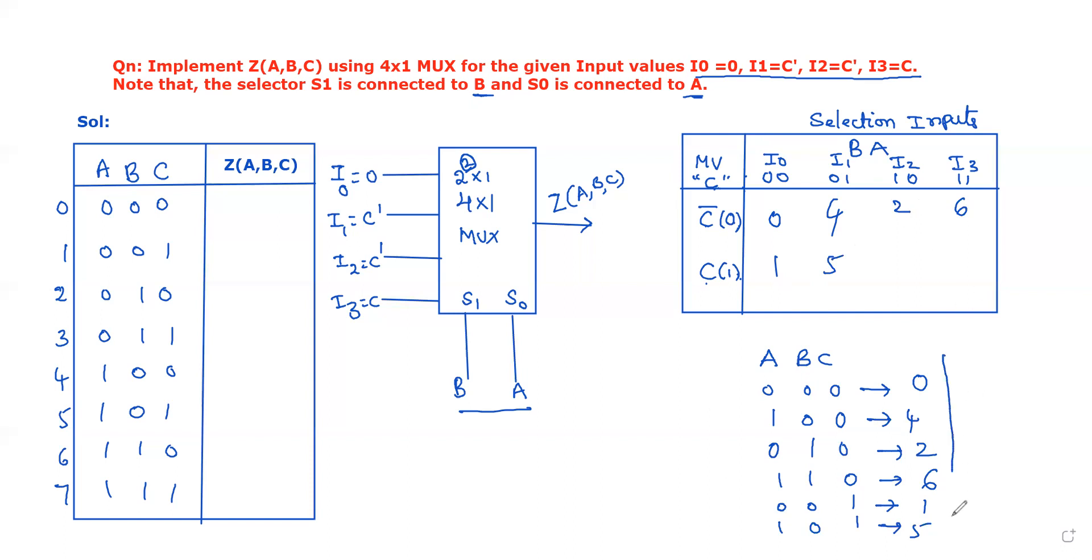Now, for the next combination A, B, C, C is 1, A is 0, B is 1, its equivalent value is 3. Next, last position, C equal to 1, and A, B are 1, 1, so its equivalent value is 7. So we have filled all the minterm numbers in the corresponding positions of A, B, C.